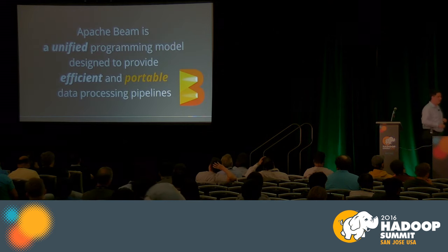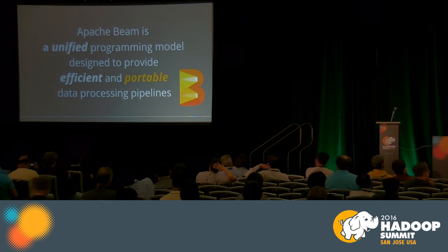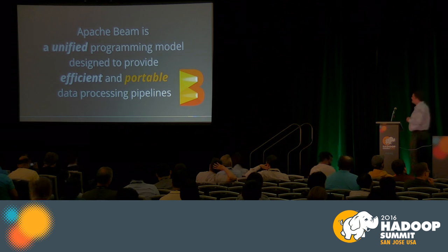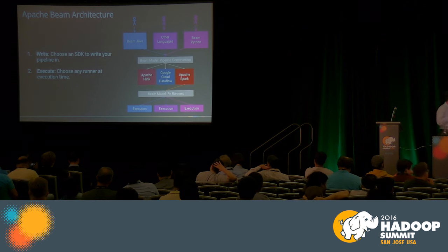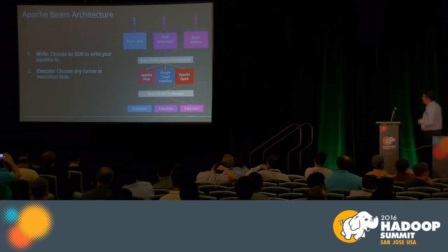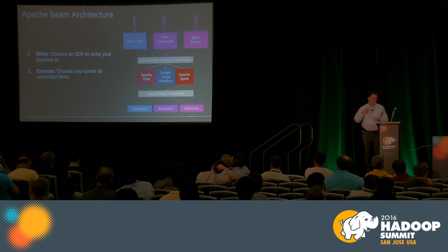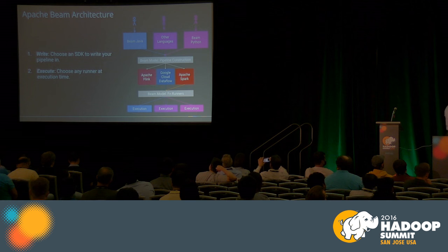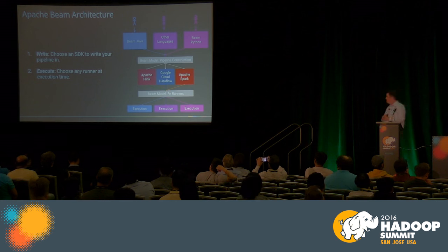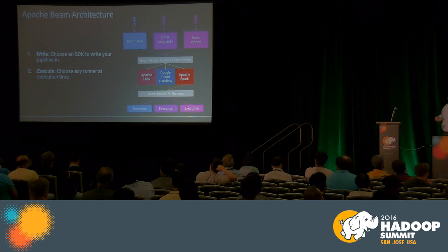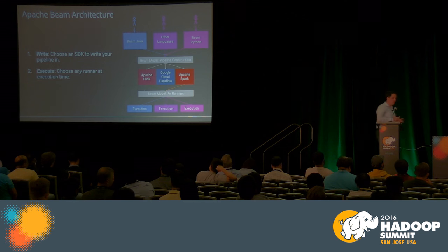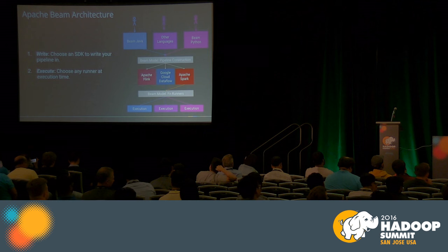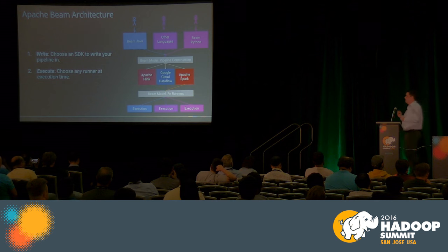The Beam model is efficient — it effectively uses available resources, and your workers are not idle. Finally, the third main point about Beam is portability. You write your pipeline in the SDK of your choice — today Java and Python — and execute it on any runner at execution time. Your pipeline is not tied to the runner it runs on. If you want to switch from on-premise to the cloud or back, which is a hard technological decision involving time, money, and effort, in Beam you write your pipeline once and execute it anywhere.